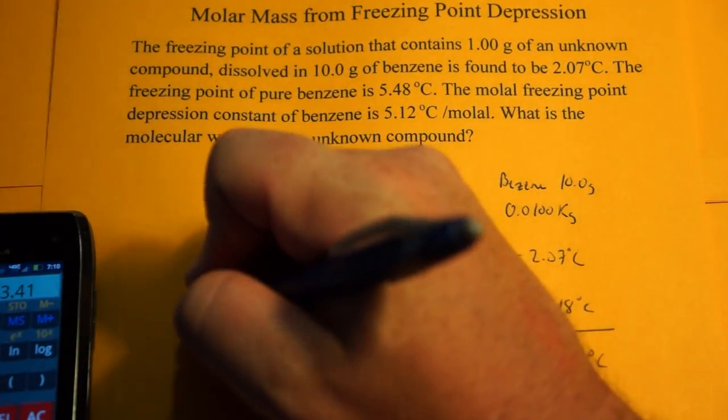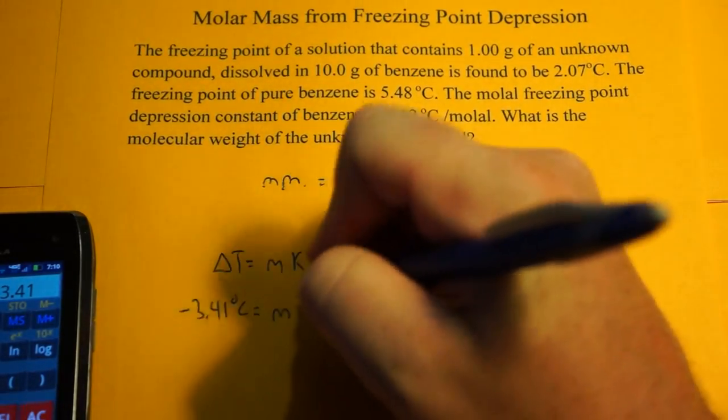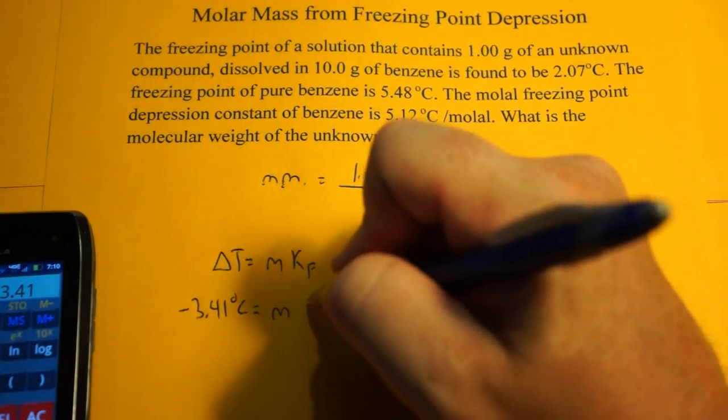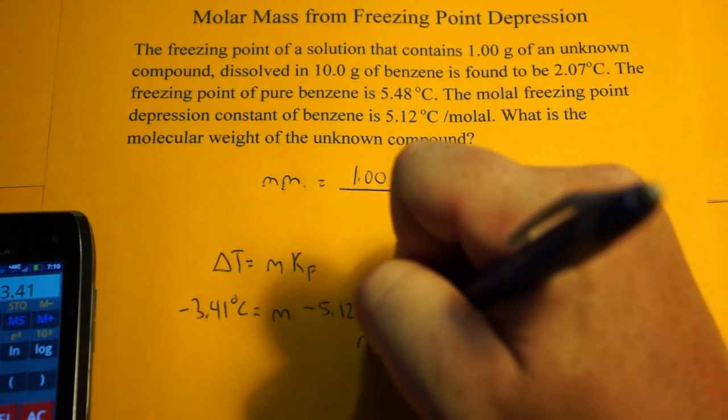So our change in temperature is negative 3.41 degrees Celsius. Molality, we don't know, but that's where our moles are. We'll figure that out. And the freezing point constant is negative 5.12 degrees Celsius per molal.